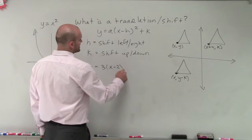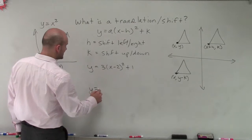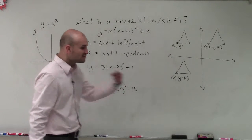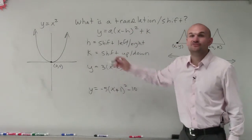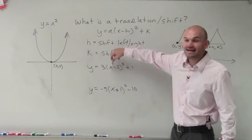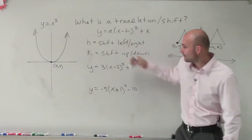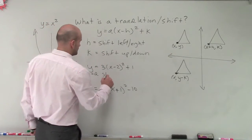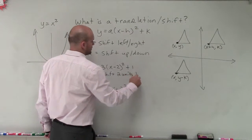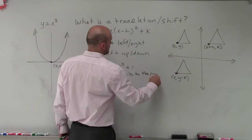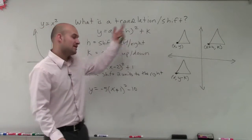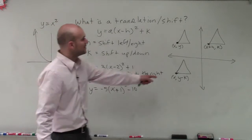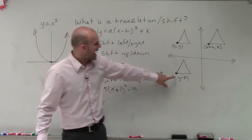So let's say I have y equals 3 times x minus 2 squared plus 1. The a value, which is 3, is not going to affect how we shift left or right. I have x minus 2, which is the same form as x minus h, so my h equals 2. Therefore I'm going to shift 2 units to the right. And k is positive 1, so k equals 1, meaning I shift one unit up — because adding to y means going up.